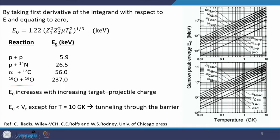What did we learn in the previous lecture? Let me start with the slide with which I ended the previous lecture. We saw the dependence of the centroid of the Gamow peak on the charges of the target and the projectile. Except at very high temperatures like 10 giga-Kelvin, the energy is always less than the Coulomb barrier and the reaction is not classically happening, but occurs quantum mechanically via tunneling. This is the formula to calculate the most effective energy at which nuclear reactions take place in stars.